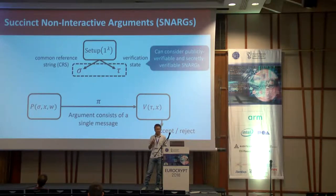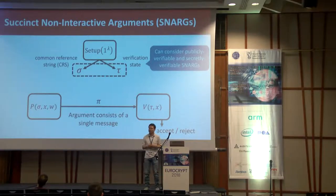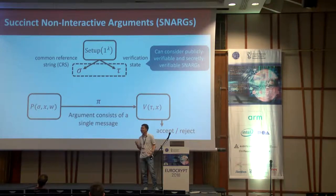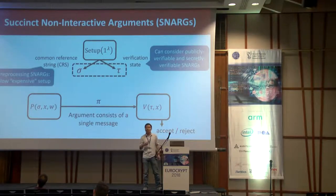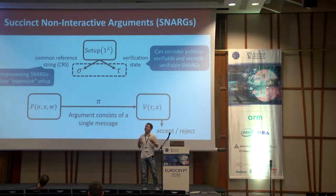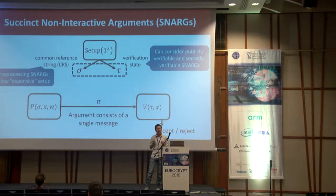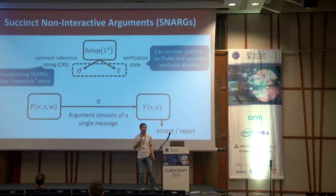We can consider many different variants of this model. In some cases, the verification state can be public, in which case we say the resulting argument system is publicly verifiable. Or it could be secret, giving us designated verifier or secretly verifiable SNARKs. In this talk, we focus primarily on building designated verifier SNARKs. Sometimes we also allow a preprocessing step that generates the common reference string to run in time proportional to the size of the circuit being verified — this preprocessing algorithm is so-called expensive because it is proportional to the circuit size rather than polylogarithmic. In this case, we say the SNARK is a preprocessing SNARK.